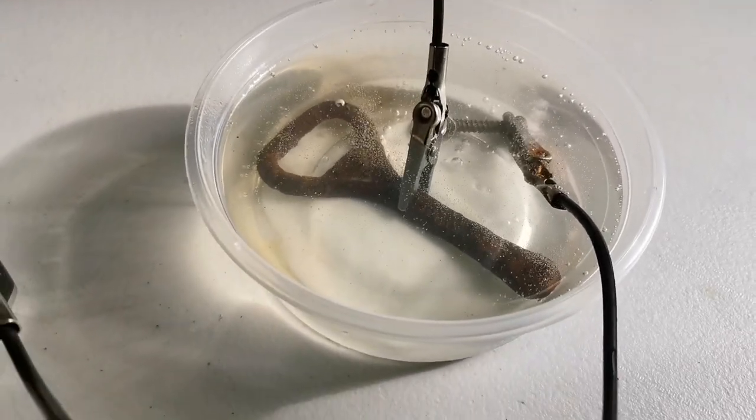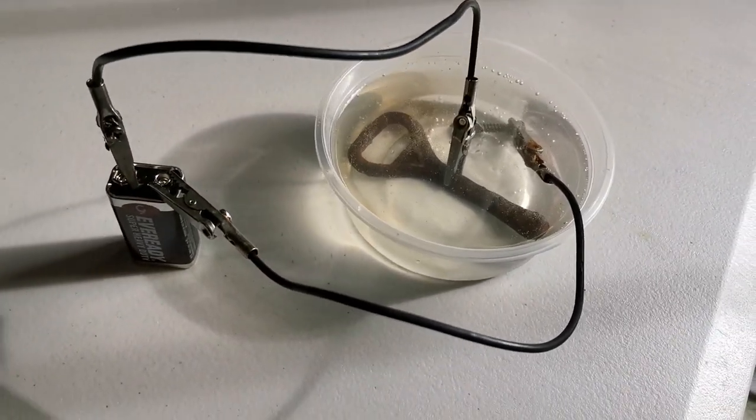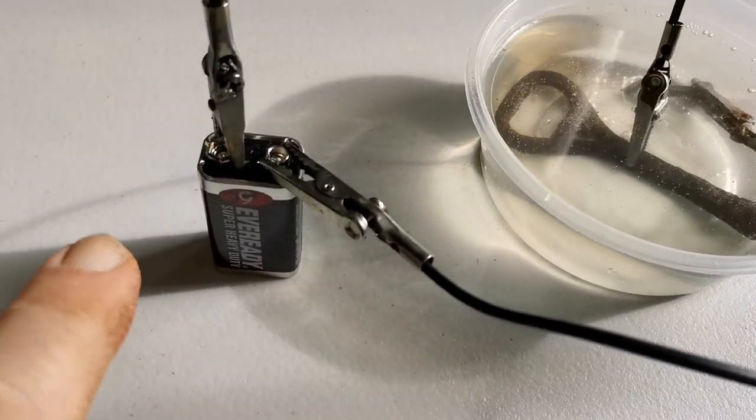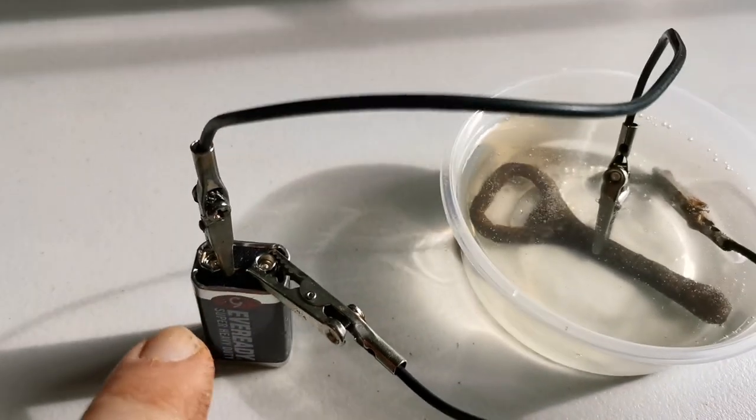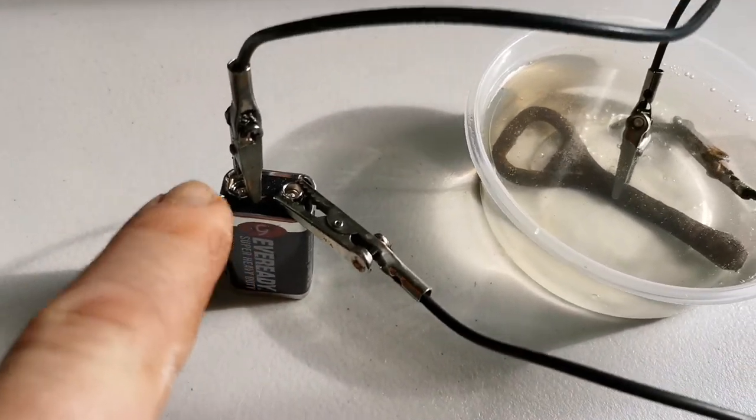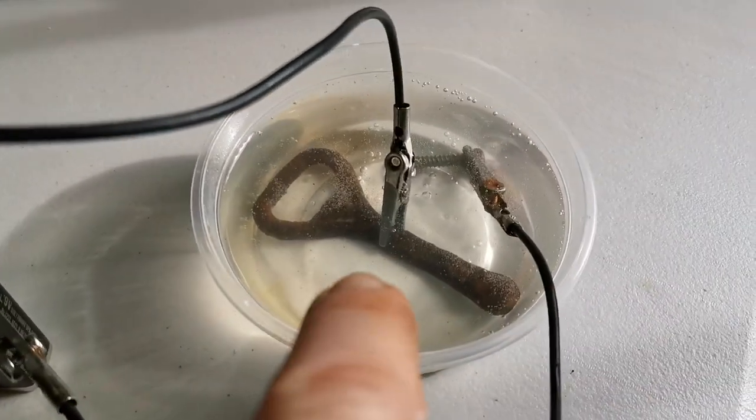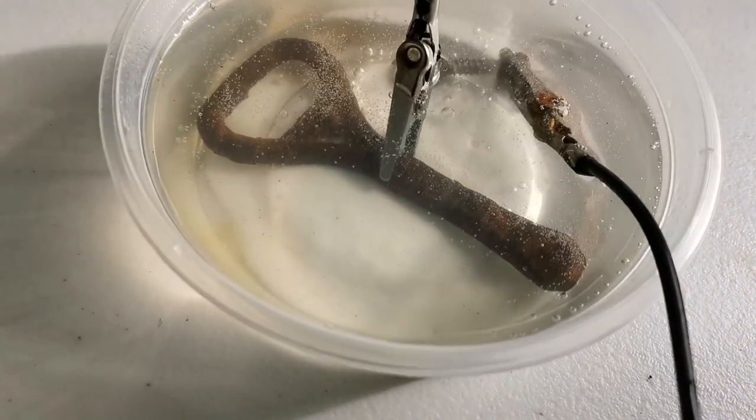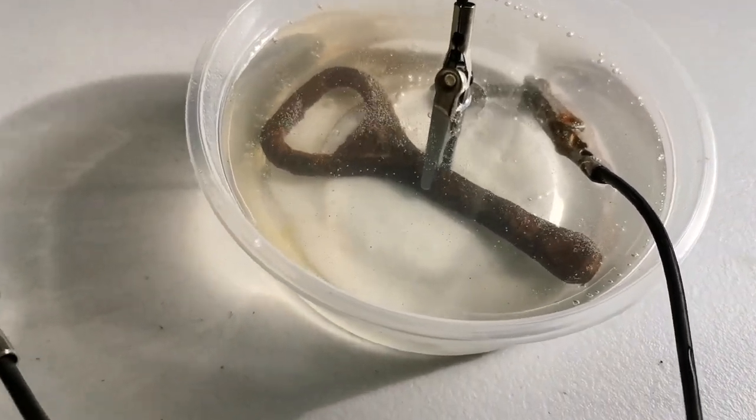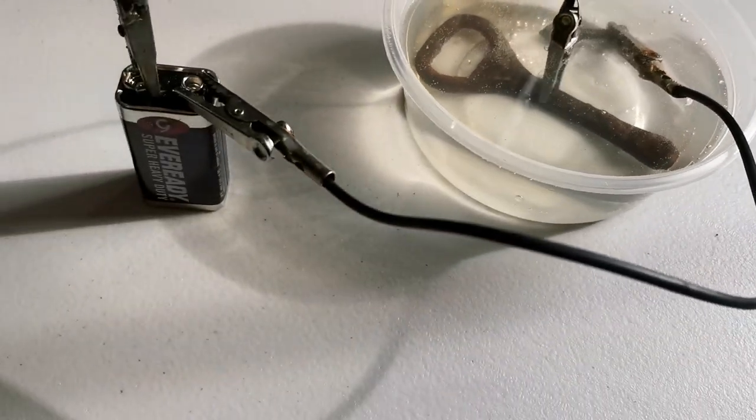The way you hook everything up is you run one of the wires from the negative terminal on the battery to the item that you're cleaning. That's very important - you get it the right way around. So negative to the item you're cleaning.